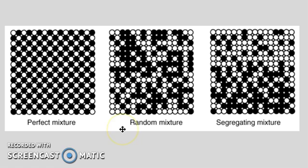A random mixture, which is usually what happens in real life, is when the possibility of finding one certain composition is the same at any point in the mixture.